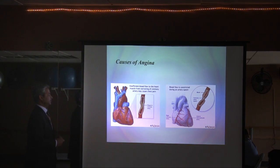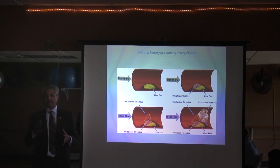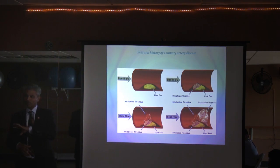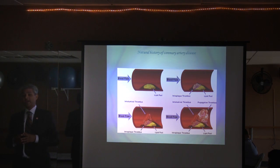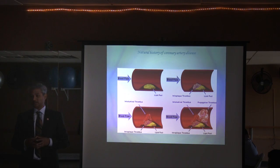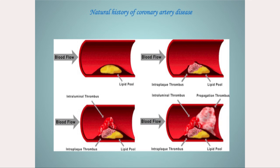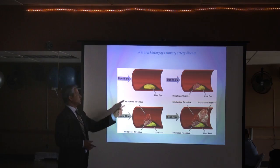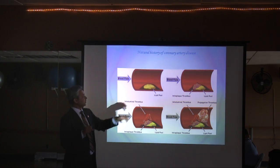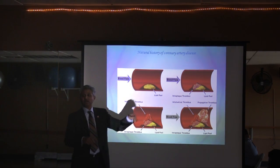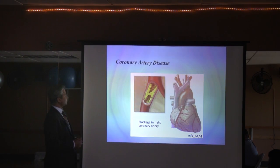Plaque formation doesn't happen overnight — it progresses over decades. Due to poor diet, children as young as two years old are starting to get fatty deposits in their arteries. You also see this in children whose parents smoke in the house or car. As cholesterol enters the artery walls, it creates blood clot formation that grows over time, eventually creating blockages.